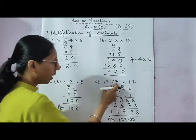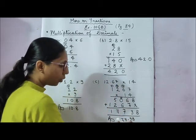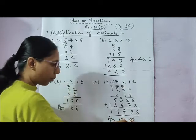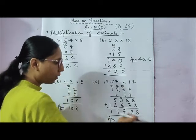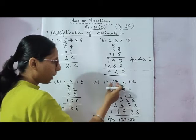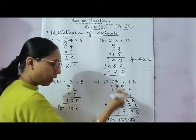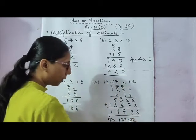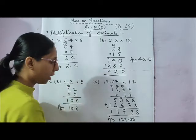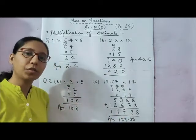But the answer will be 177.38. Why? Because in 12.67 there are 2 digits after the decimal point. That's why we count 2 digits from right to left and place the decimal point before them. So we count 2 digits from the right and mark the point, giving us 177.38.